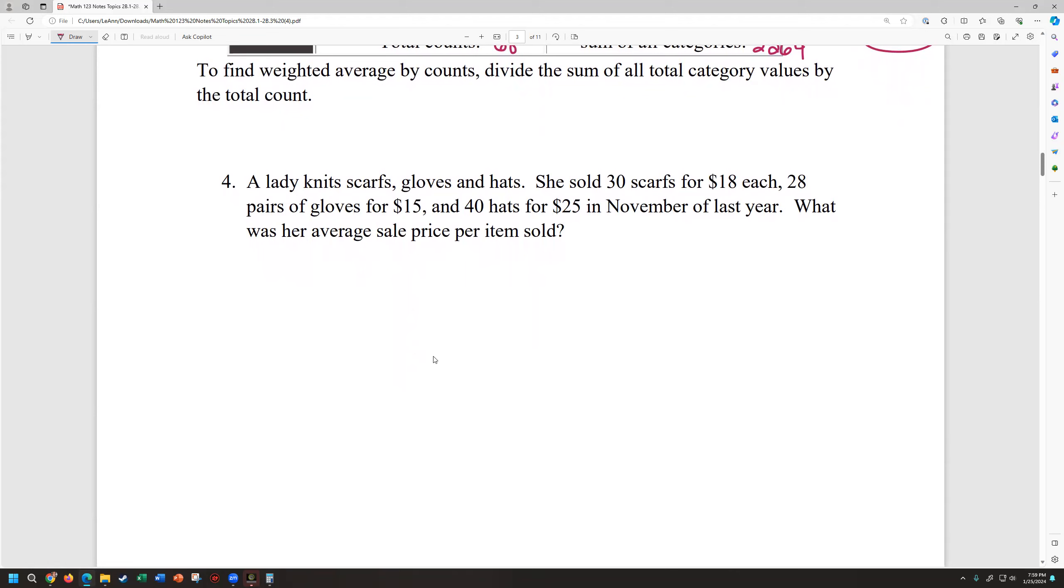So a lady knit scarves, gloves, and hats. She sold 30 scarves for $18 each, 28 pairs of gloves for $15 each, and 40 hats for $25 each in November of last year. What is her average sales price per item? So when you're trying to figure out which one is your value and which one is your count, the value has to do with how are they asking the question? It's the average sales price. So the sales price is going to be the value. The number of items that she sold is going to be the counts then.